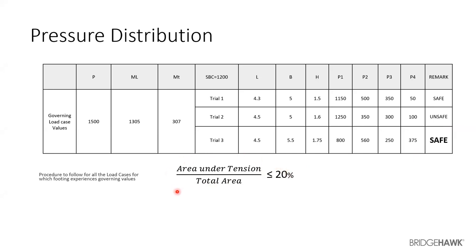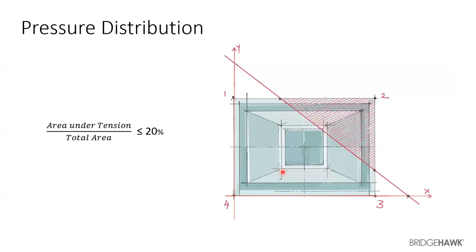The area in tension (area retention) must be less than 20% of the total area. We use a BT program to input the coordinates of all four footing points and the different load cases, and it gives a Y-axis and N-axis value that bisects the area. The shaded portion indicates the tension area — this tension area must remain below 20% of the total area to be acceptable.